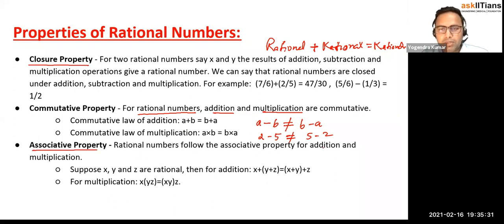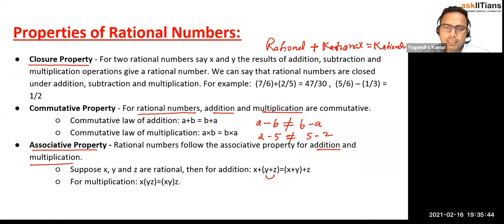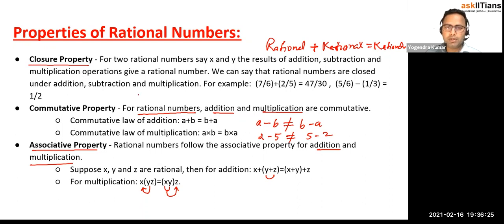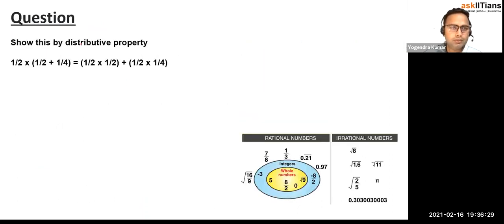Associative property: rational numbers follow associative property for addition and multiplication. For addition, adding x then y then z gives the same result whether you add x and y first and then add z, or add y and z first and then add x. Same for multiplication. So associative and commutative properties apply to addition and multiplication only. Closure property applies to addition, subtraction, and multiplication.